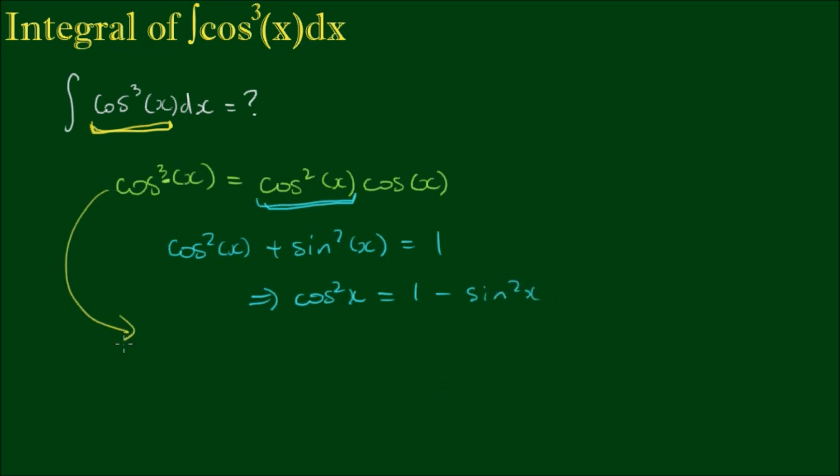Okay, so now we can write cos cubed x as 1 minus sine squared x times cos x. Then we can rewrite the integration of both sides. Both these integrals are now equivalent. The one on the right-hand side is in a form that we can integrate because we can use a substitution.